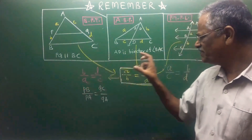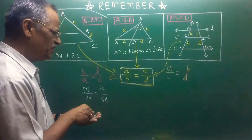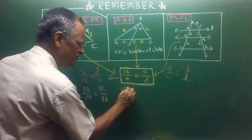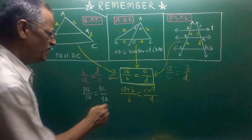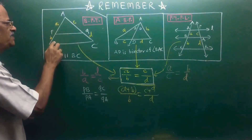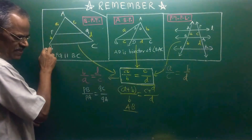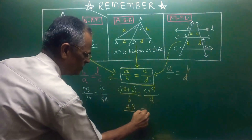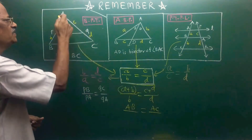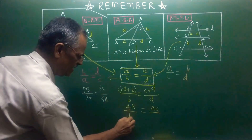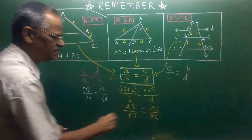So invertendo is possible, alternendo is possible. Again, an important result about two equal ratios — you know that A plus B upon B is equal to C plus D upon D. This is componendo. A plus B gives us AB, the total length of segment AB. And on the right-hand side, C plus D is AC. So AB upon the small segment PB is equal to AC upon the small segment QC. We can use this componendo also.